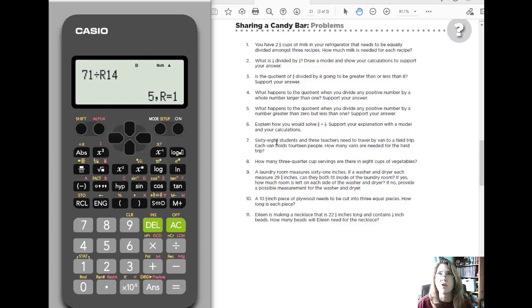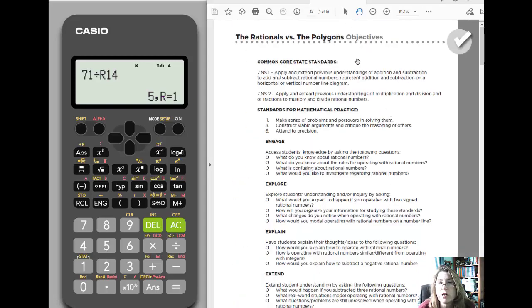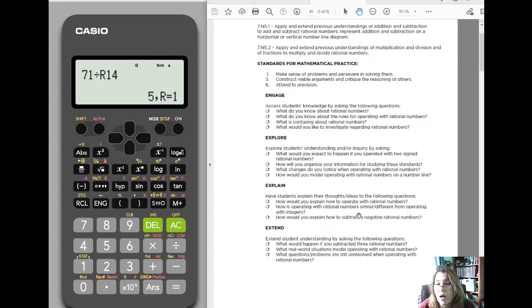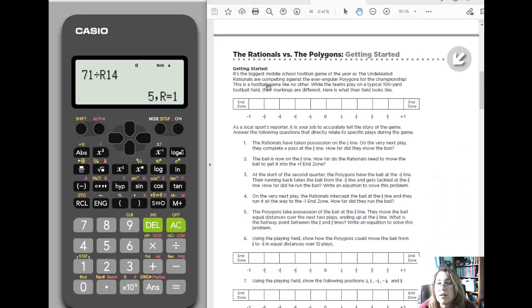So these are the kinds of nice things that you can really use this calculator for to help students understand what all that, what's the decimal? What's that really mean in context? So this is the first activity. And we're going to scroll to the second activity over here. So this one is rationals versus polygons. And again, it is the, it's got the nice standards up here. It's got suggestions on what you can do and what to ask.